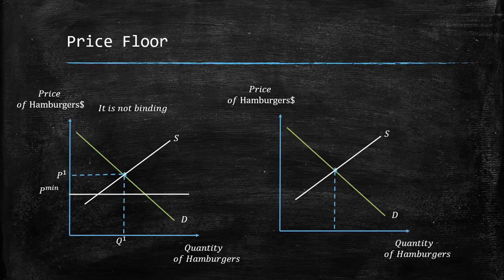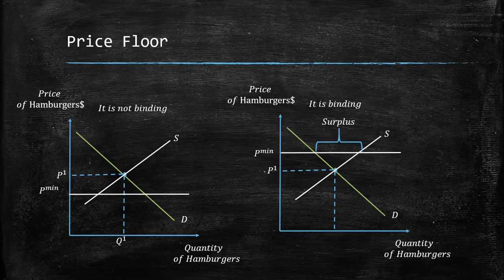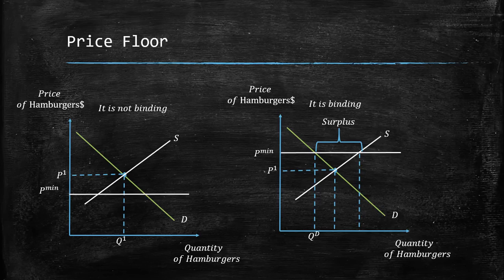In the second case, the price floor is binding — the minimum price is higher than the equilibrium price. Here we see a difference called a surplus. Because the price is higher, quantity demanded is lower than the equilibrium quantity. But on the supply side, suppliers have more incentive to produce at this higher price, giving us QS. This difference between QS and the quantity demanded is the surplus.